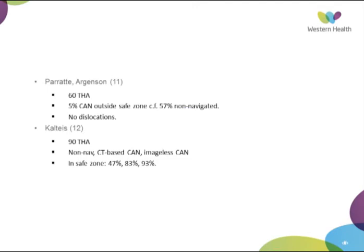Peratt and Jensen assessed 60 total hips and found only 5% outside the safe zone with computer-assisted navigation, versus more than half with non-navigated cases — though even non-navigated cases had no dislocations despite many being outside the safe zone. Caltease's 90-hip study with three groups showed computer-assisted navigation achieved more than 80% within the safe zone, while fewer than 50% of non-navigated hip replacements were within the safe zone.